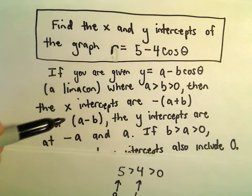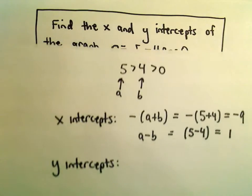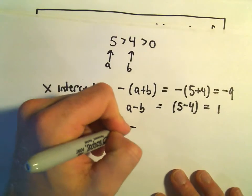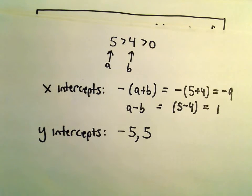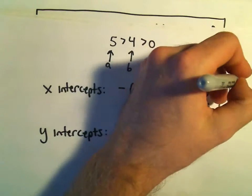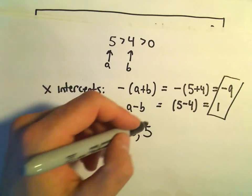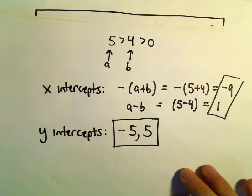And then the y-intercepts, we just take negative a and positive a. So the y-intercepts will be at negative 5 and at positive 5. And that's it. Now we're done. We've got our x-intercepts over here, our two y-intercepts here.